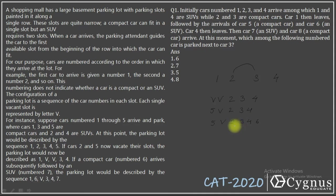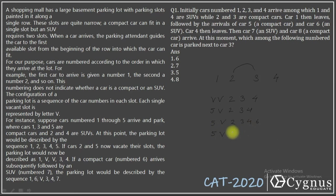Then car 7 and car 8 arrive. Car 4 then leaves — car 4 was an SUV — so now there is a distribution of: 5, vacant, 2, 3, then two vacant places, and then 6.